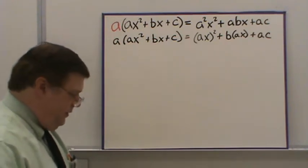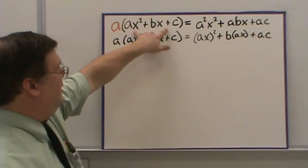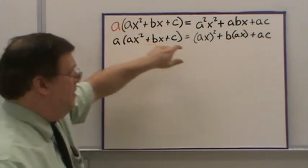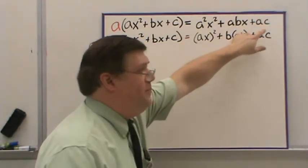My proof starts off with multiplying your normal AX squared plus BX plus C form by A. When I do that, I end up with A squared X squared, ABX plus AC.